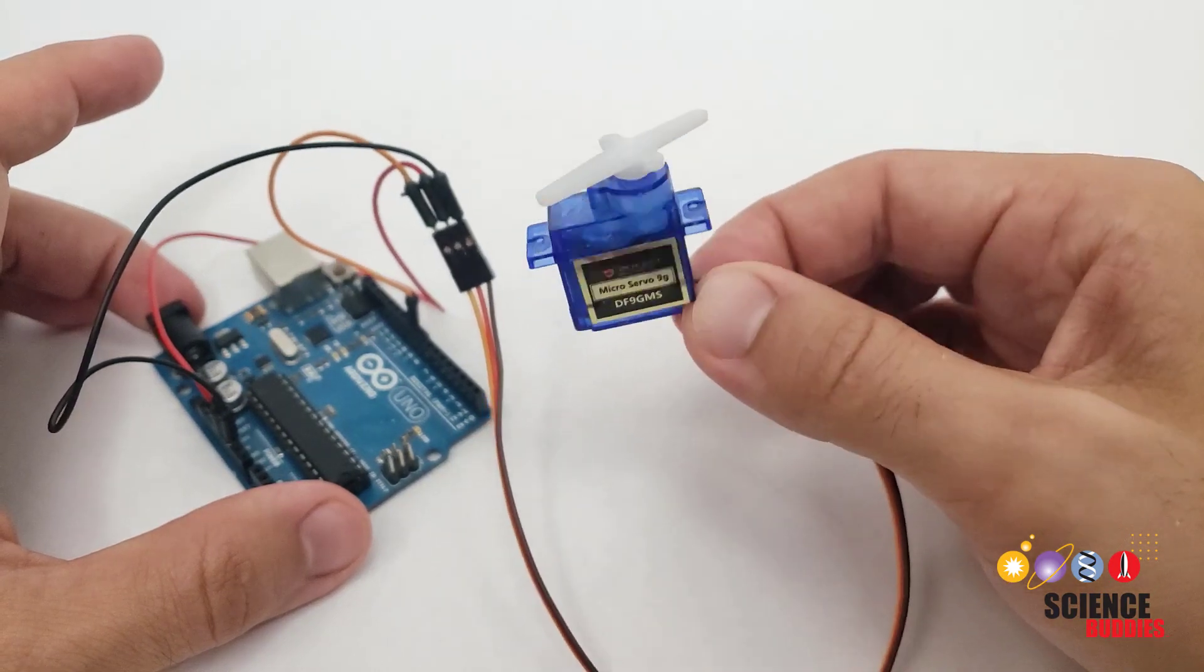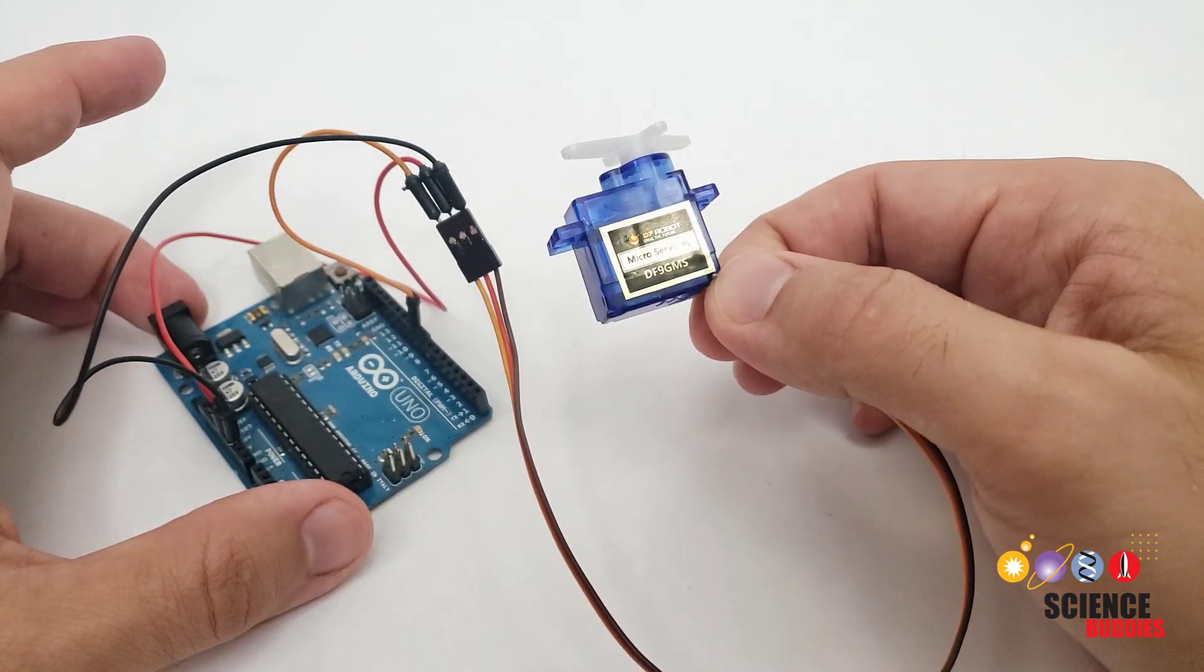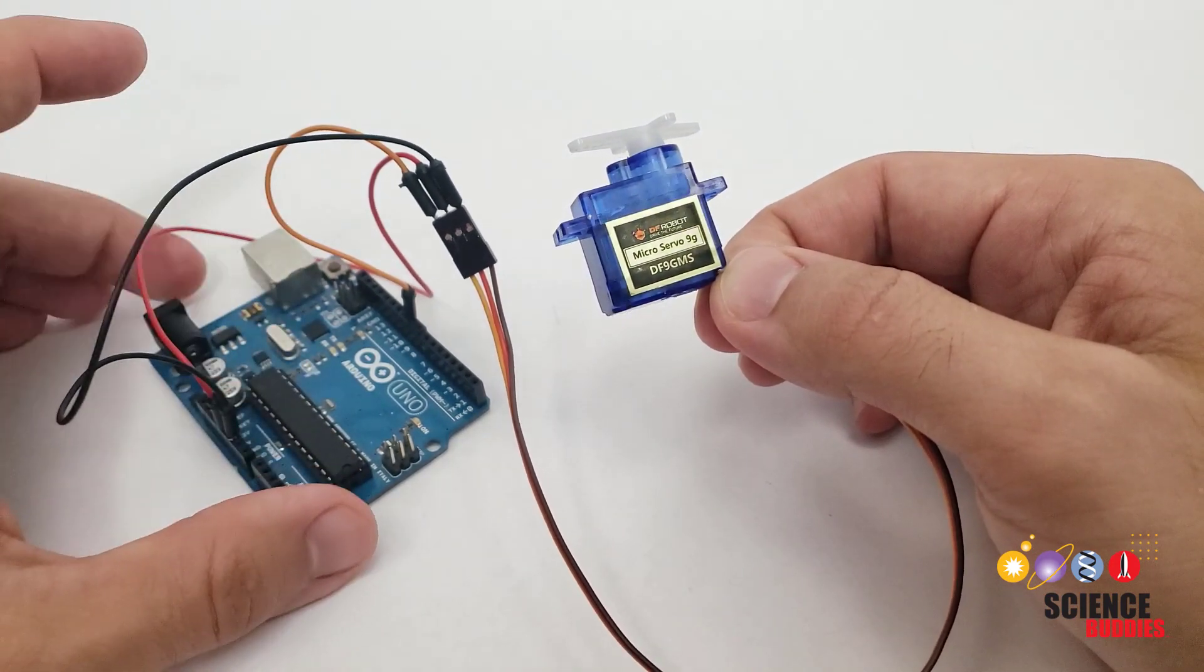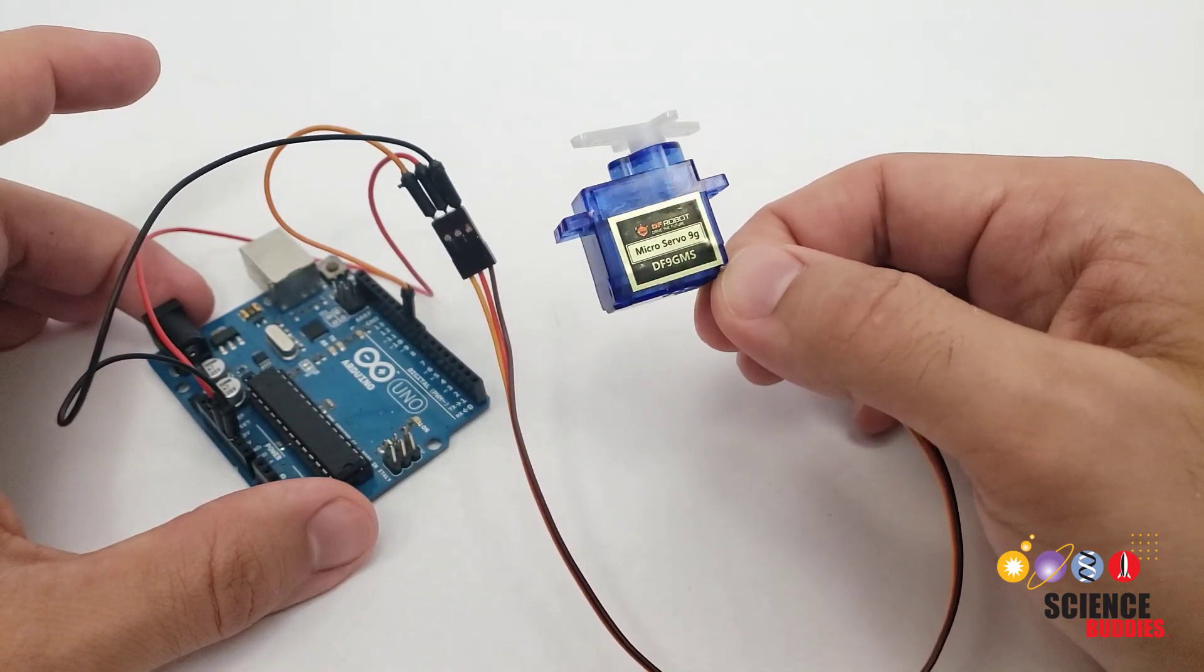Now the positional servo can only rotate about 180 degrees. It cannot go through a complete rotation. The command signal you send it from the Arduino controls the servo's angle.